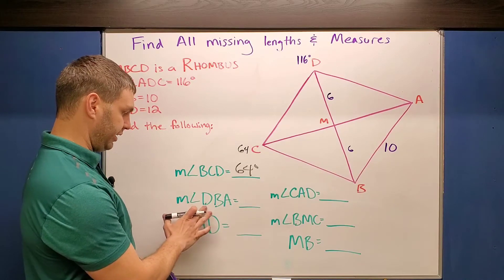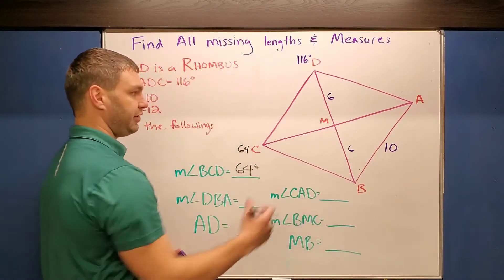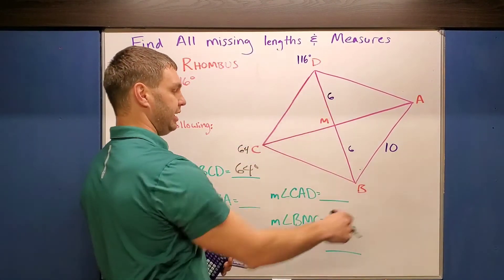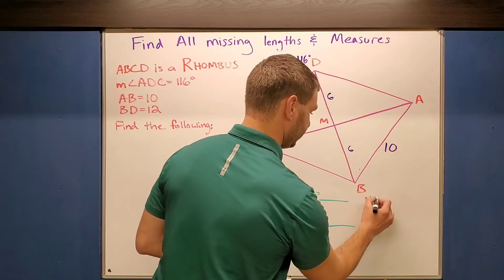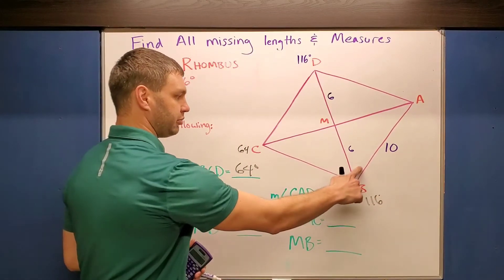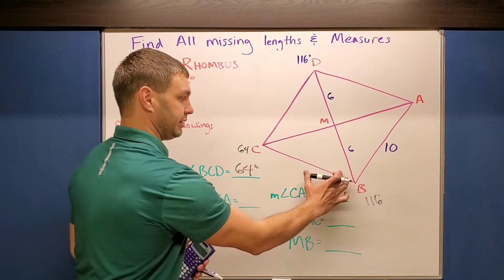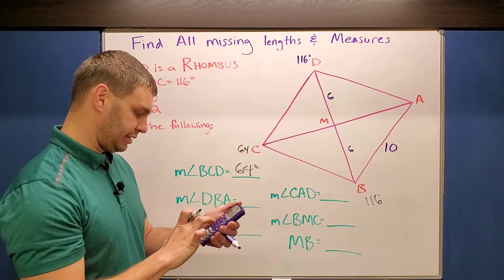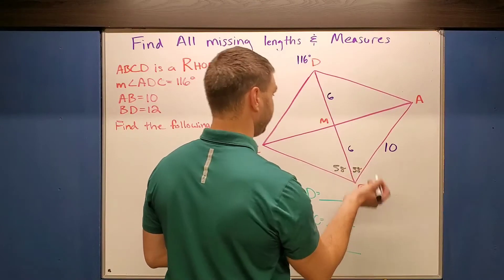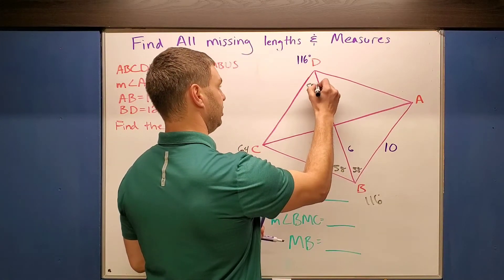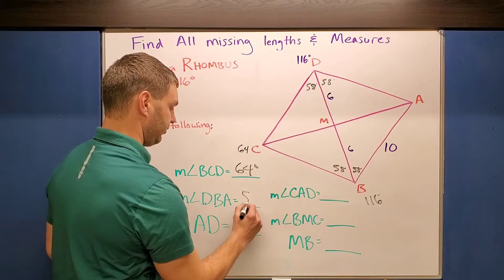Next, it wants us to find the measure of angle DBA. In order to find that, we remember that opposite angles are congruent. So if this is 116, the whole measure of angle B is also 116. A rhombus has a special property that says the diagonals bisect the angles, so those two sub-angles are going to be congruent. Taking 116 divided by 2 gives 58. So DBA is 58 degrees, and likewise these two up here are also 58 degrees.